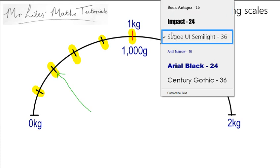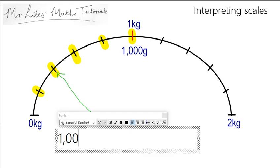And what you can do is take the 1,000 grams and divide it by the number of intervals that go from 0 to 1,000. And 1,000 divided by 5 is 200.